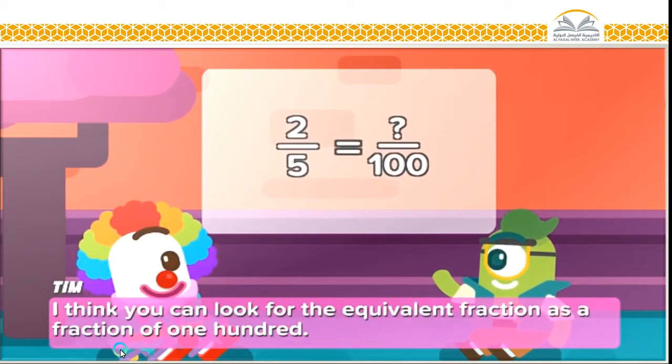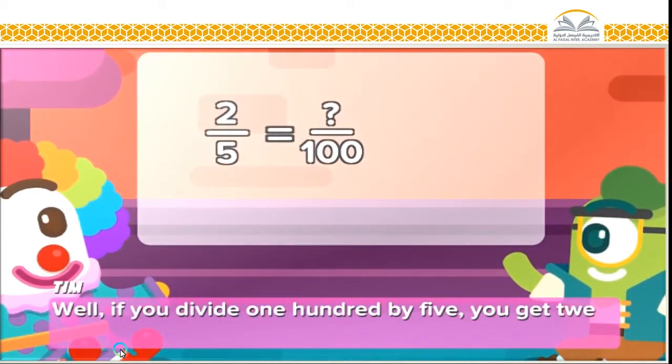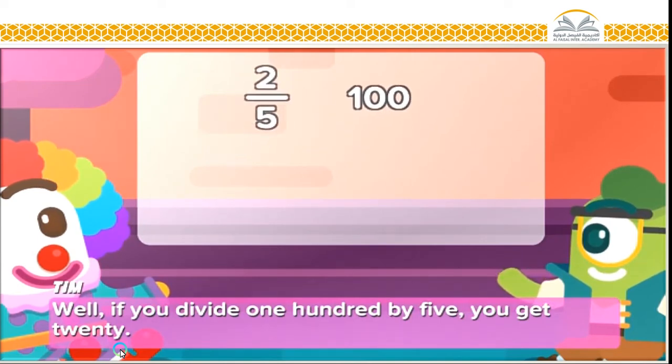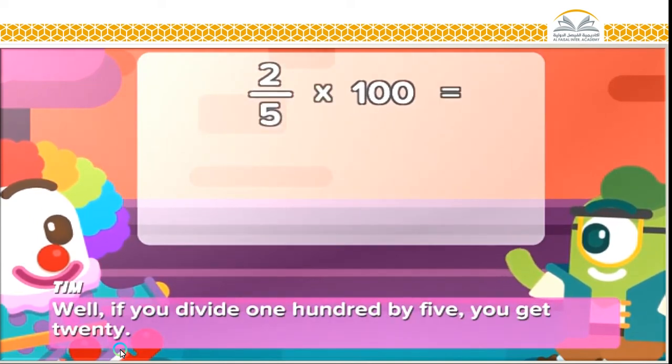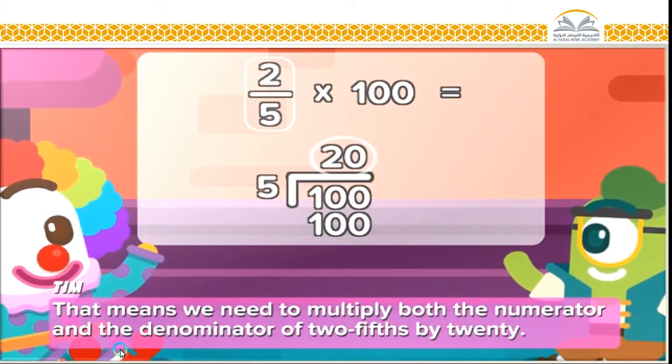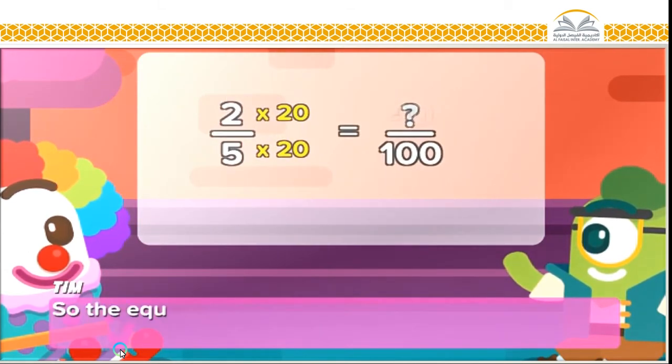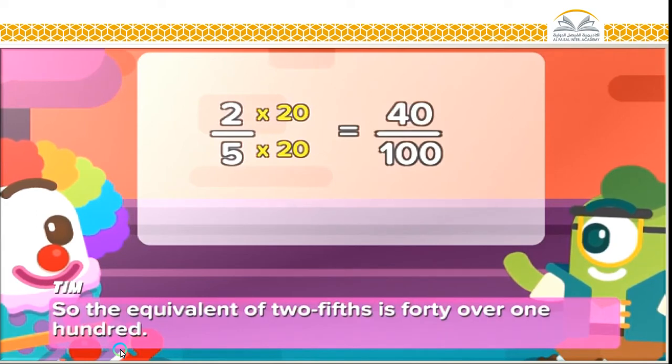Now, if percentage is a fraction of 100, what do you think you can do here? I think you can look for the equivalent fraction as a fraction of 100. That's right! So how can you do that with two-fifths? Well, if you divide 100 by 5, you get 20.